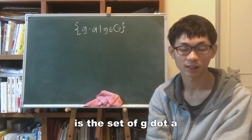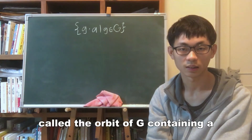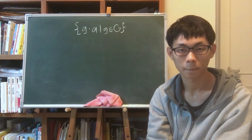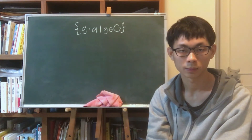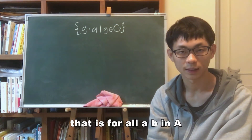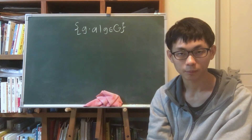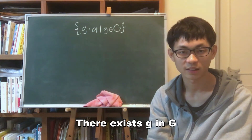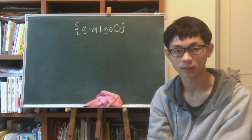The equivalence class of a is the set { g · a : g ∈ G }, called the orbit of G containing a. The action of G on A is called transitive if there is only one orbit — that is, for all a, b in A, there exists g in G such that a = g · b.